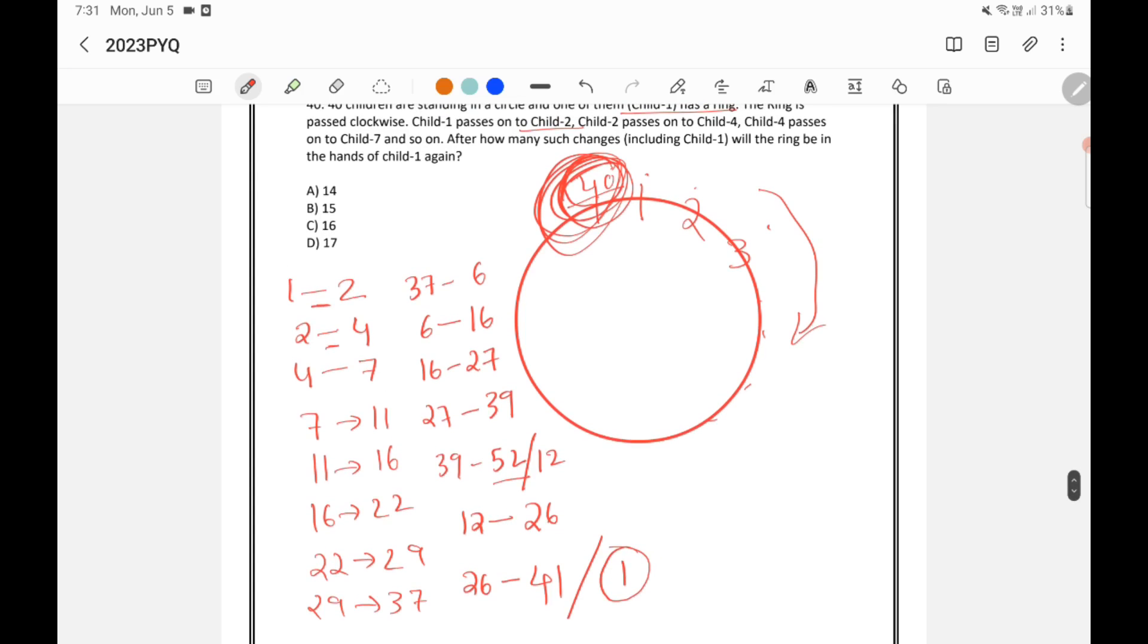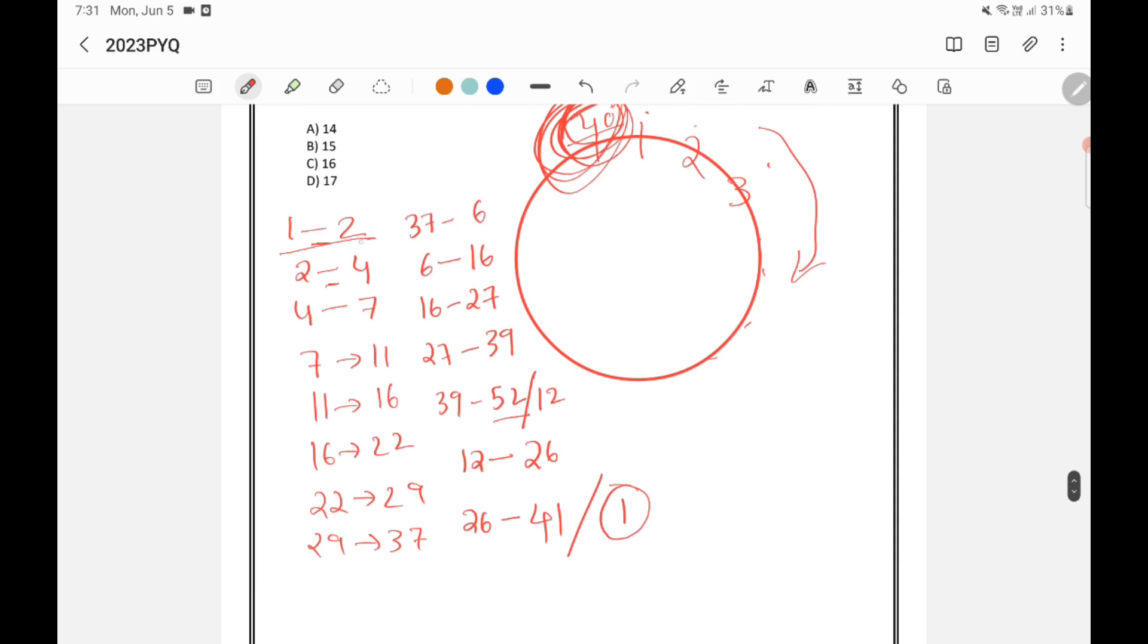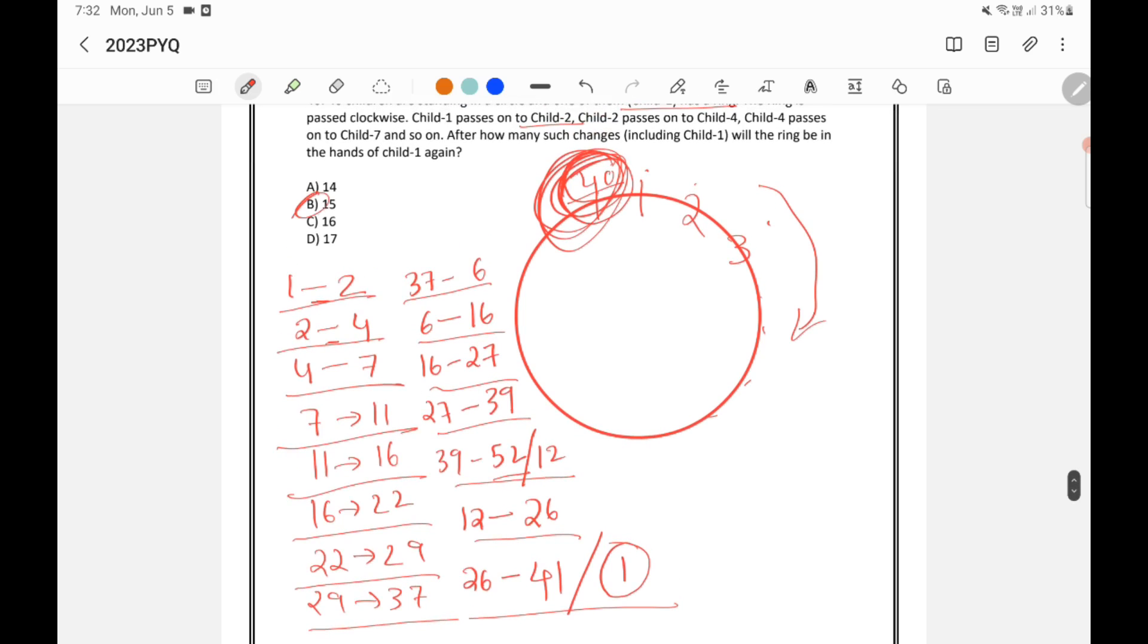How many changes are there? 1, 2, 3, 4, 5, 6, 7, 8, 9, 10, 11, 12, 13, 14, and 15 changes are there. So B is the right answer.